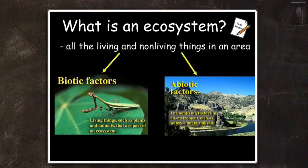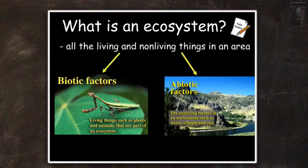So what is an ecosystem? An ecosystem is all of the living and non-living things in an area. Those things are considered to be biotic factors and abiotic factors. Biotic factors are living things such as plants and animals that are part of an ecosystem. The abiotic factors are the non-living factors in an environment such as water, climate, and soil.